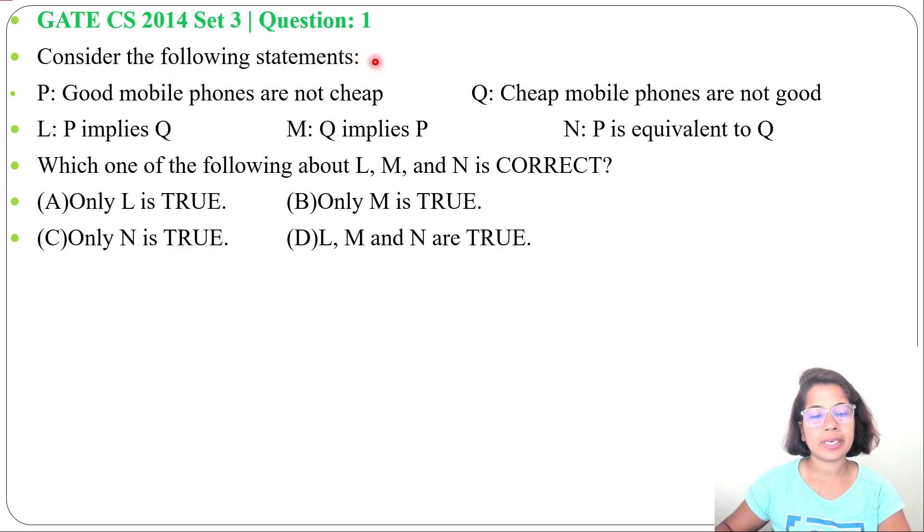Consider the following statements: P: Good mobile phones are not cheap. Q: Cheap mobile phones are not good. Now L is P implies Q, M is Q implies P, and N is P is equivalent to Q. Which one of the following about L, M, and N is correct, and four options are given.